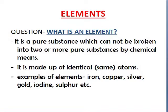What is an element? It is a pure substance which cannot be broken into two or more pure substances by chemical means. It cannot be further divided into more pure substances — it is already pure. It is made up of identical or same kind of atoms. Atoms are the smallest particles of matter.